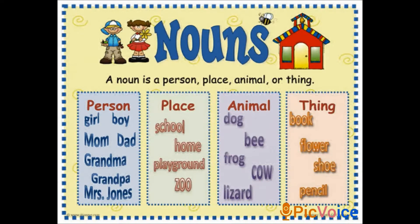Look at this image, children. They have given some examples for noun. Noun is a person, place, animal or thing. Examples for person: girl, boy, mom, dad, grandma, grandpa, Mrs. Johns. For place: school, home, playground, zoo. For animal: dog, bee, frog, cow, lizard. And examples for thing: book, flower, shoe, pencil.